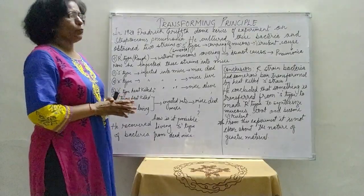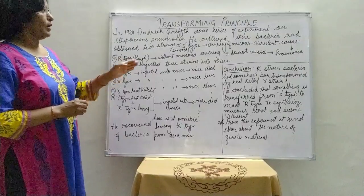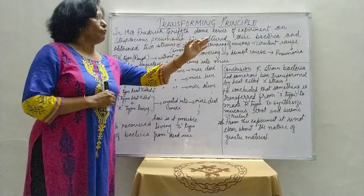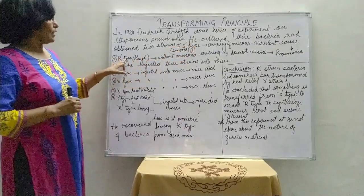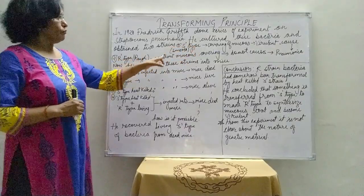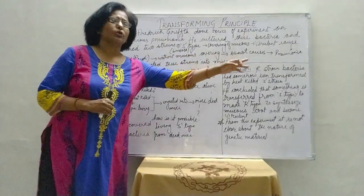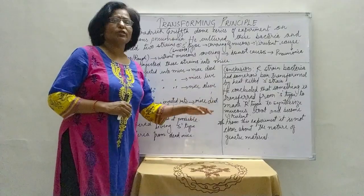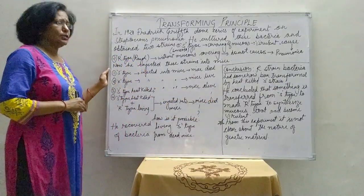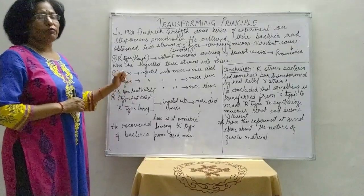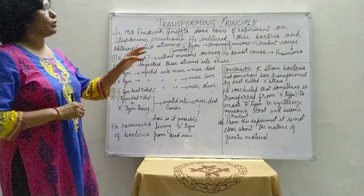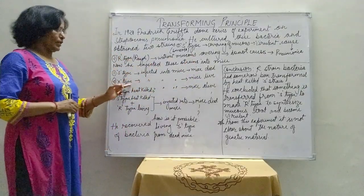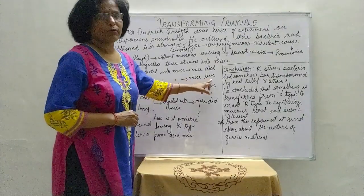He cultured the bacteria and obtained two strains, S type and R type. S type bacteria have a covering of mucus, are virulent, and cause pneumonia. The R type, rough type, does not have mucus covering and does not cause pneumonia. He injected these two strains one by one into mice. When he injected S type bacteria, which is virulent with an outer covering of mucus, the mice died. When he injected R type bacteria, the mice remained alive.